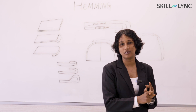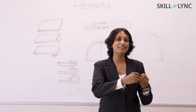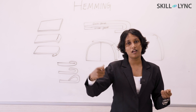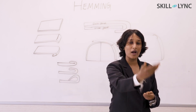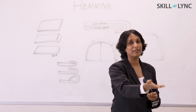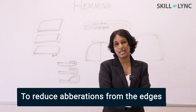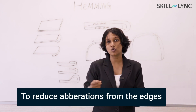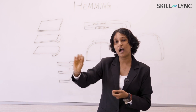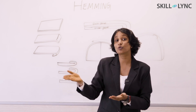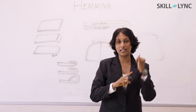Why exactly do we have to do hemming? Of course it is a joining method, but does it serve any other purposes? First, when we have a sheet metal, the edges won't be very perfect — just like why we do hemming for clothes, because the edges can be frayed. Similarly, the edges of sheet metal are not perfect; they are burred and there are imperfections.